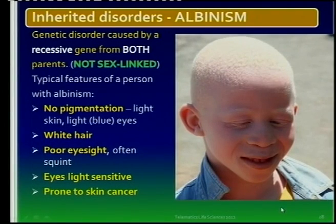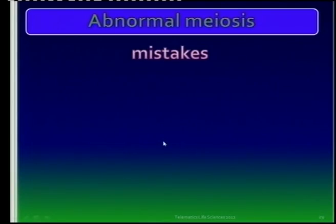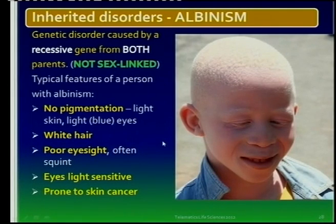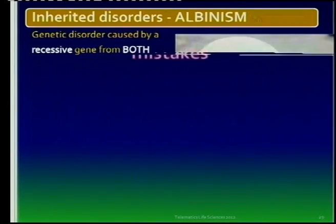There's another genetic disorder — albinism. Albinism is because of a lack of pigmentation, no pigmentation. You have to look at the symptoms. It's normal inheritance, dominant recessive. Albinism is a recessive characteristic, so anybody with albinism is homozygous for the characteristic.